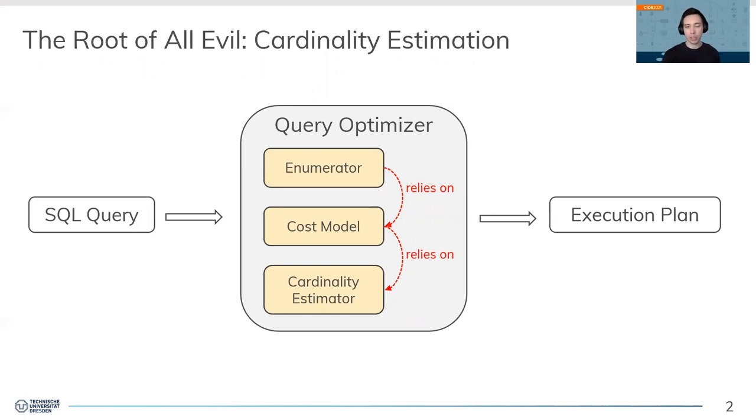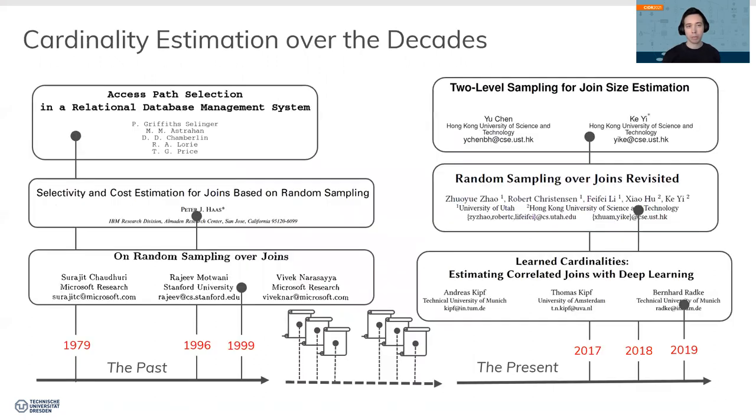And third, the cardinality estimator, which gives us the most crucial input: the estimated size of intermediate results to the cost model. Therefore, everything stands and falls with the cardinality estimator. For no surprise, cardinality estimation has been a vital research topic for over four decades now. We see a recurring interest in applying sampling to the problem of join cardinality estimation.